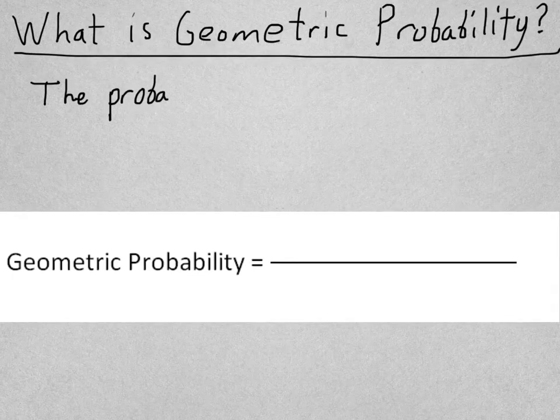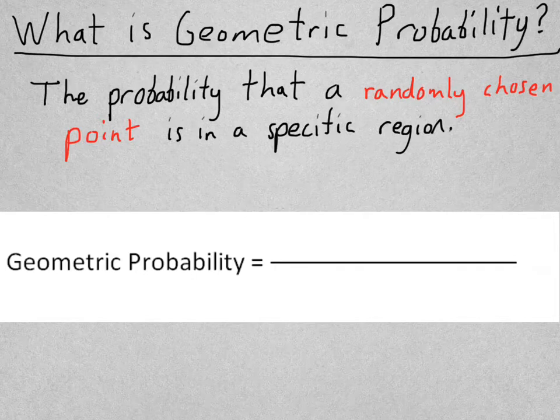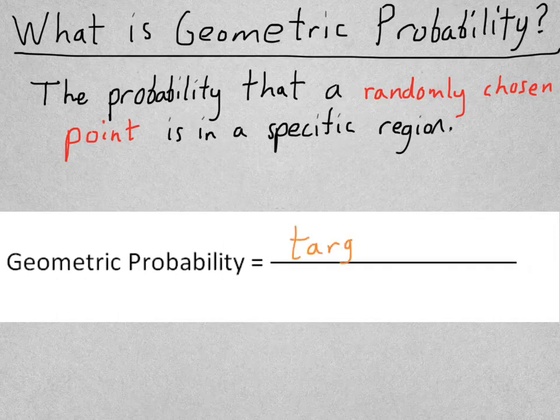So what is geometric probability? Well, the geometric probability is the probability that a randomly selected point is in a specific region or area of the figure. As a formula, the geometric probability is the target area divided by the total area.